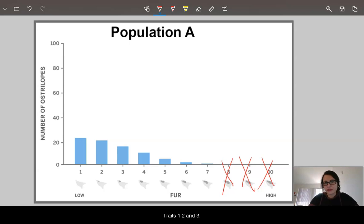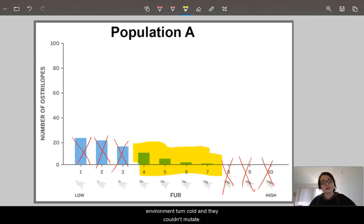And traits 1, 2, and 3, I would predict that those ones would die because they don't have enough fur to survive. However, we do have these middle ground traits between 4, 5, 6, and 7 that, well, there's at least a possibility that maybe this population A could survive if its environment turned cold and they couldn't mutate.